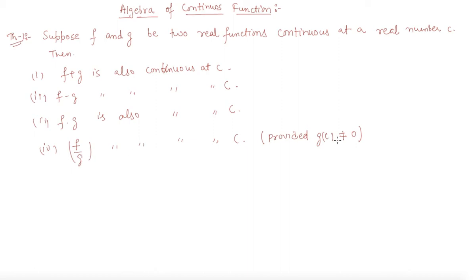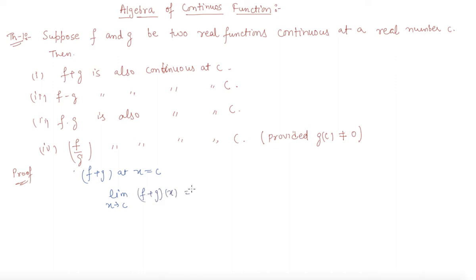Let me give you the proof of one of these properties. We need to check whether F plus G at x equal to C is continuous or not. We check the limit: limit as x tends to C of (F plus G)(x), which equals limit as x tends to C of F(x) plus G(x). By definition, we can break this into separate limits: limit as x tends to C of F(x) plus limit as x tends to C of G(x).